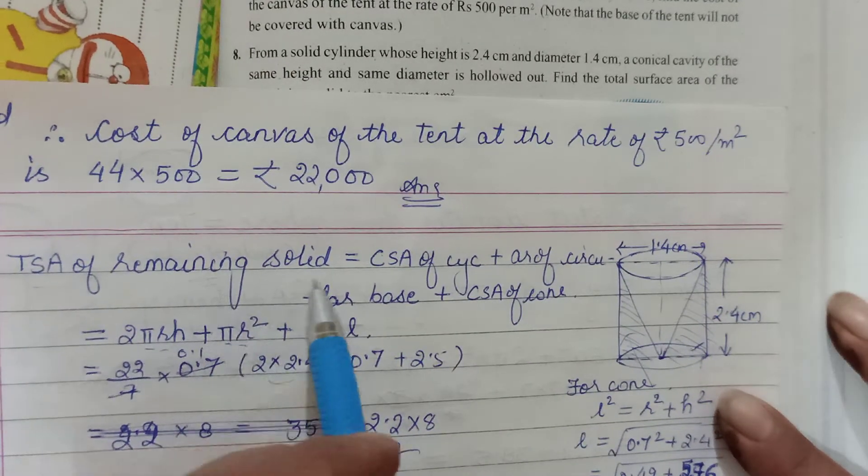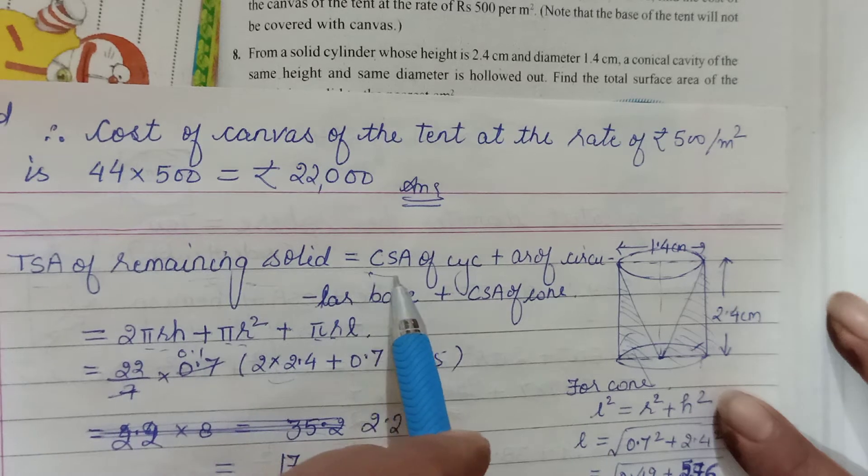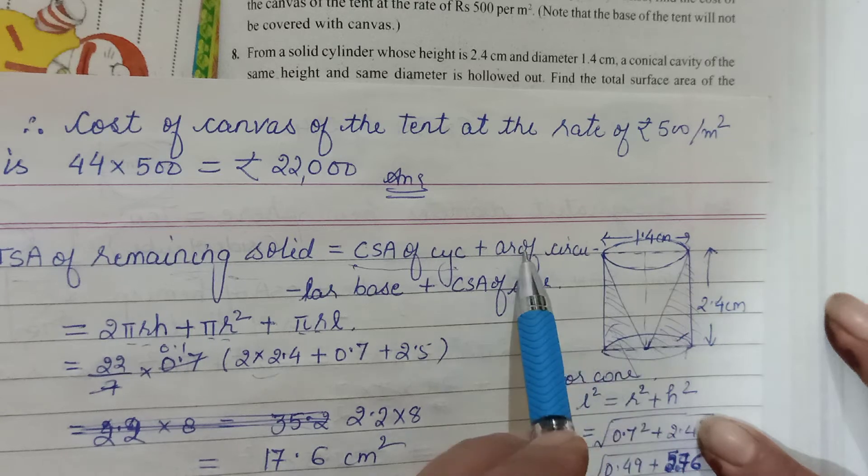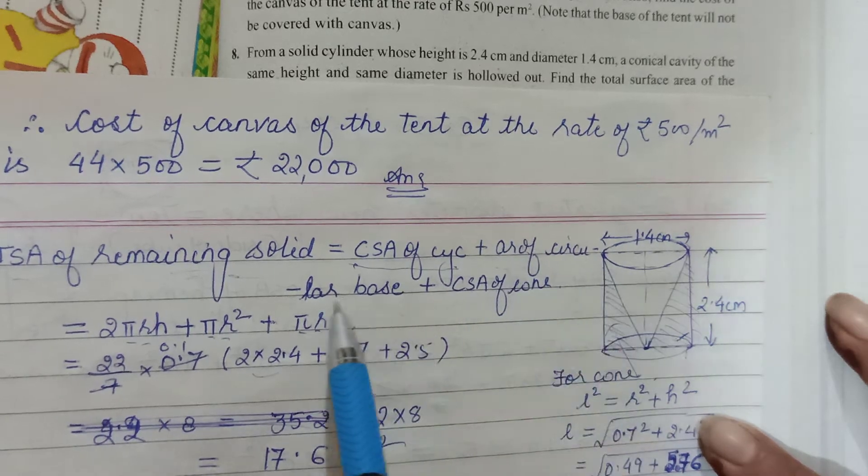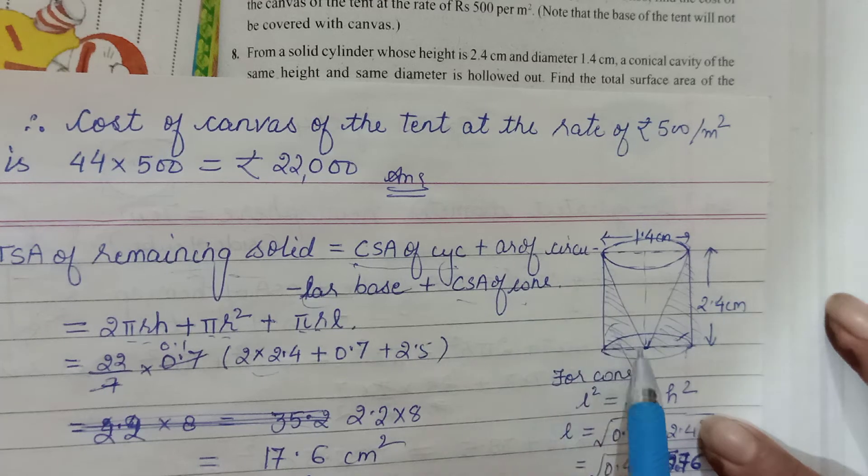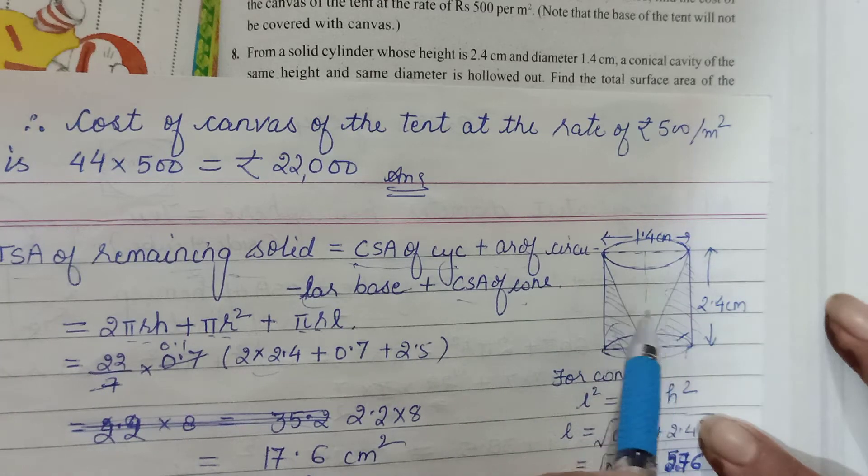Therefore, keeping that in mind, whatever solid is remaining, what I see in that one is a cylinder and also this circular base is visible. So area of the circle I have included, and CSA of cone - when you peep in you will see the conical part.